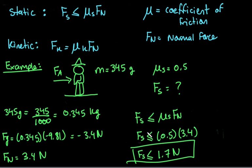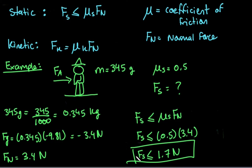Just a reminder that if you had to isolate for one of the variables and divide by a negative number, the inequality symbol does have to flip. In this case it was a straightforward calculation. So the static friction force has to be less than or equal to 1.7 N for the statue not to move. Thank you for listening and I will see you all next time.